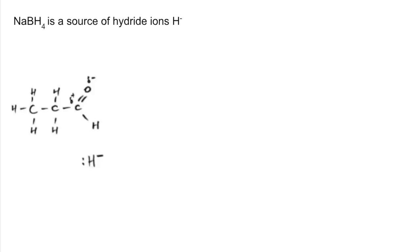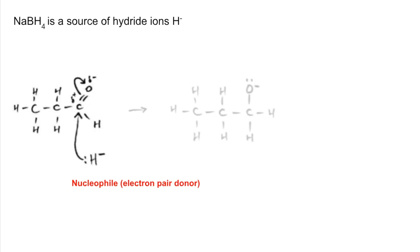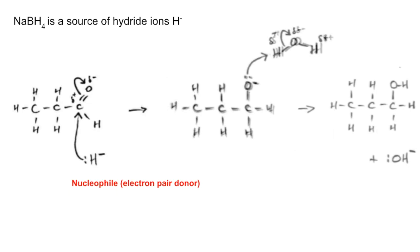Moving on to the mechanism. NaBH4 is a source of hydride ions or H- ions. That's going to act as a nucleophile - it donates that pair of electrons to the slightly positive carbon, repelling the pi electron pair in the CO double bond completely onto the oxygen. That gives us this unstable intermediate. Bring a water molecule into play and form a bond with one of the hydrogens of the water molecule, generating the alcohol product and an OH- ion.